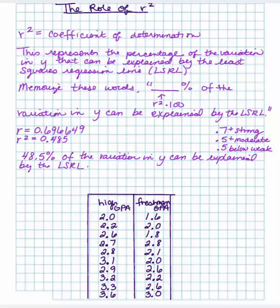And technically you could also use the opposite of that or the converse of that. What amount is unexplained? So 100% minus 48.5, that leaves you 51.5% of the variation in Y cannot be explained by the least squares regression line.